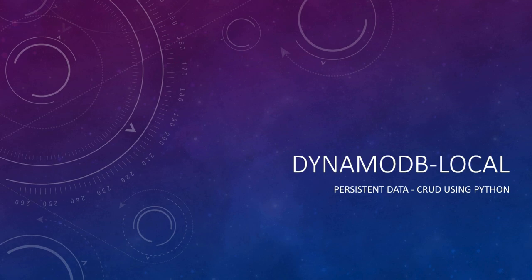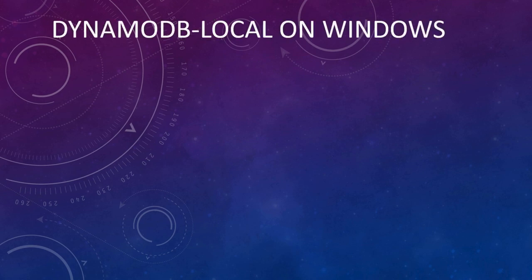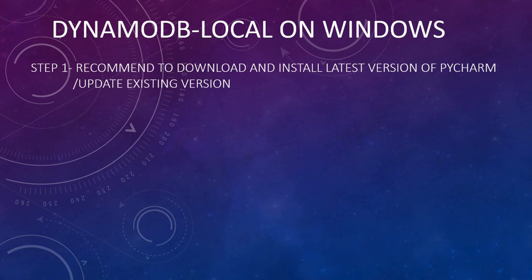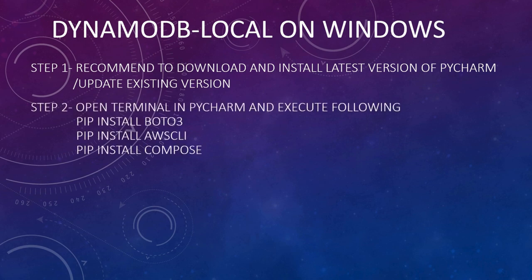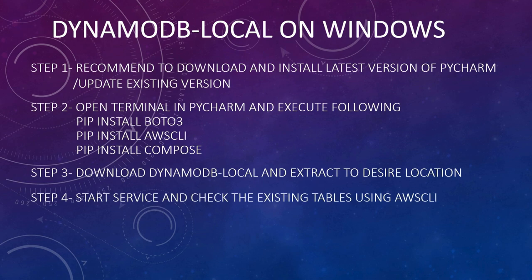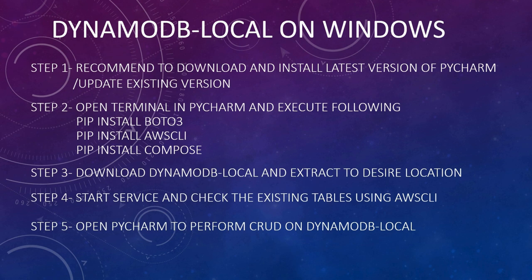Today we are going to look into DynamoDB local and perform different operations using Python. We are going to install DynamoDB local on Windows operating system. The first step is to install the latest PyCharm version. If you already have PyCharm installed, you can update the existing version. Second step is to install Boto3, AWS CLI, and Compose using the terminal in PyCharm.